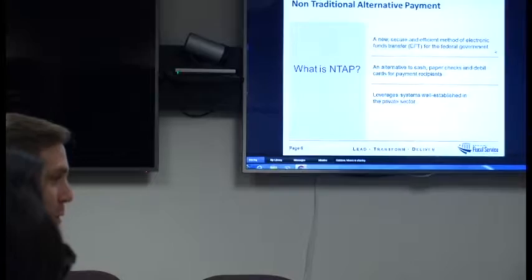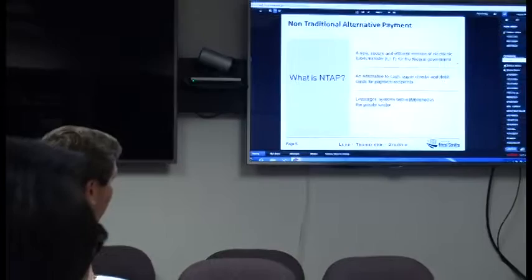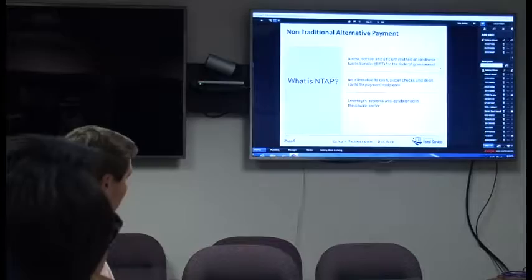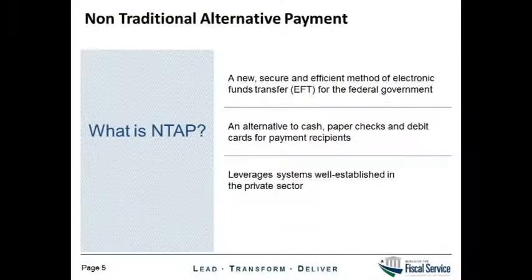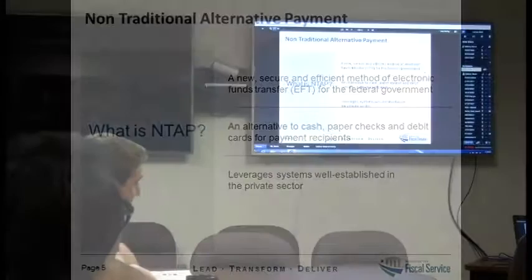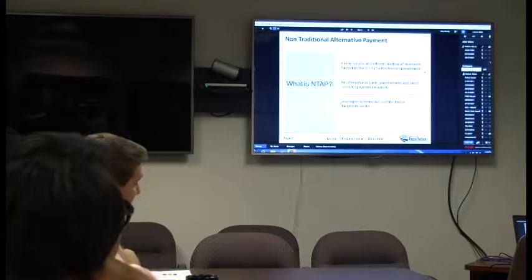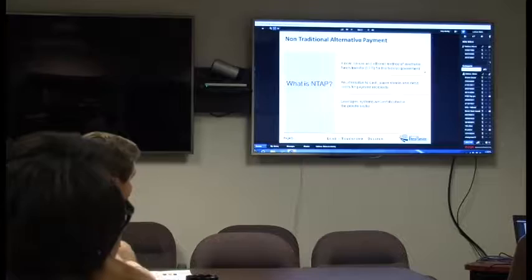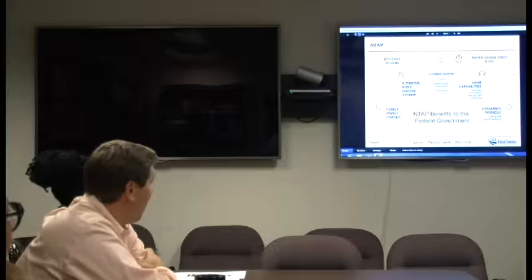I'm here today to talk about NTAP. You may see this name changing in the near future, and that's a good thing. When we started this effort a few years ago, we thought 'non-traditional alternative payment' was a good name. We hope that sooner rather than later, these are not non-traditional — they're traditional-type payments. What is NTAP? Simply to the government, it's just an EFT payment, just an ACH push credit. But it's not your traditional direct deposit. To the end user, the recipient, these are payments going to digital wallets like PayPal, Venmo, or Google Wallet. To us, it's an EFT payment; to the recipient, it's getting paid without having to share banking information with the government — efficiently and electronically.